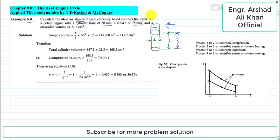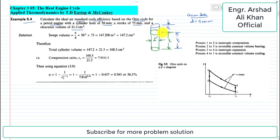In this statement we are given: the cylinder bore, which is the diameter of the cylinder, d = 50 mm; the stroke or length of stroke, represented by small l, is 75 mm; and the clearance volume is 21.3 cubic centimeters.